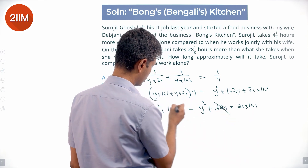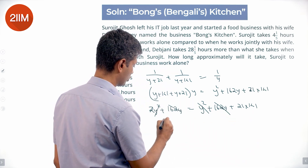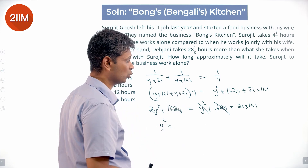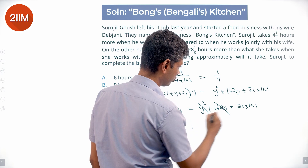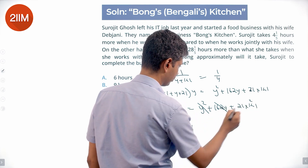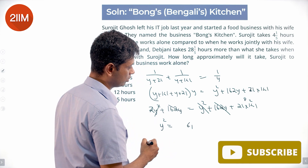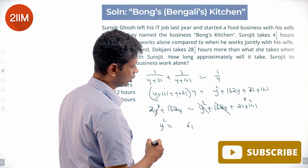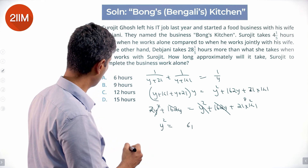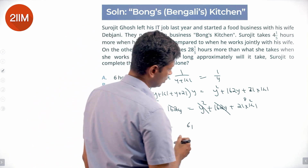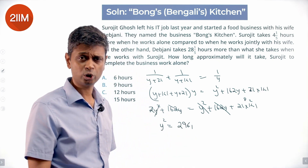So 162y cancels out, and y² cancels from one side, leaving us with y² = 21 × 141. Computing: 21 × 141 — 21 × 1 = 21, 21 × 4 = 84 plus 2 is 86... that gives us 21 + 8 = 29 for part of the calculation.